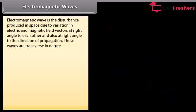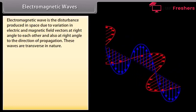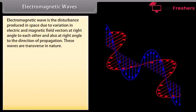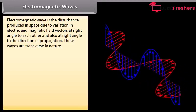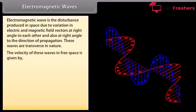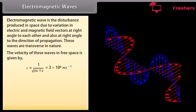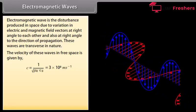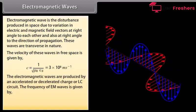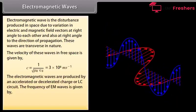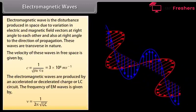Electromagnetic wave is the disturbance produced in space due to variation in electric and magnetic field vectors at right angles to each other, and also at right angles to the direction of propagation. These waves are transverse in nature. The velocity of these waves in free space equals the velocity of light, which is 3 × 10⁸ m/s. Electromagnetic waves are produced by an accelerated or decelerated charge or LC circuit, and the frequency of EM waves is given by 1/(2π√LC).